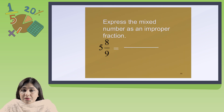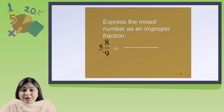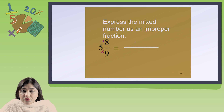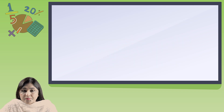Now can you tell me how to express a mixed number as an improper fraction? Multiply the whole number with the denominator: 5 times 9 is 45, plus 8 is 53. So you write 53 and the denominator remains the same — 53 by 9.